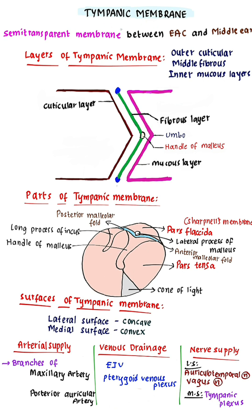The tympanic membrane is derived from all 3 germ layers. The cuticular layer is derived from ectoderm, the fibrous layer from mesoderm, and the mucus layer from endoderm. Parts of tympanic membrane: It has 2 parts — pars flaccida and pars tensa. Pars tensa forms most of the tympanic membrane.